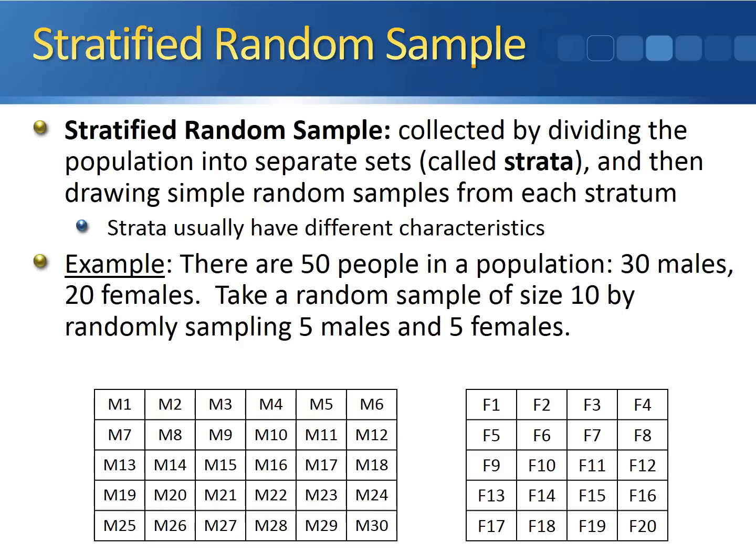What we can do is divide them up into their two separate groups. For the males, we assign each male a number from 1 to 30. For the females, we assign each female a number between 1 and 20. We put the numbers from 1 through 30 in one hat and we randomly select five of them. So in this case the males with the numbers 3, 7, 18, 22, and 29 are selected for the sample. And we do the same thing for the females. We put the numbers from 1 through 20 in a separate hat and select five of them. So in this case females 4, 6, 9, 16, and 19 have been selected for the sample.